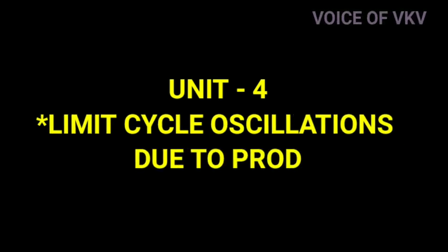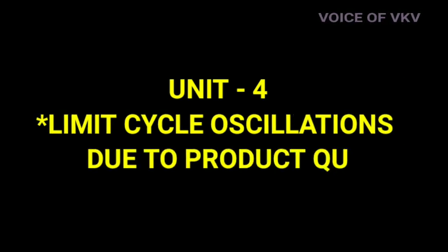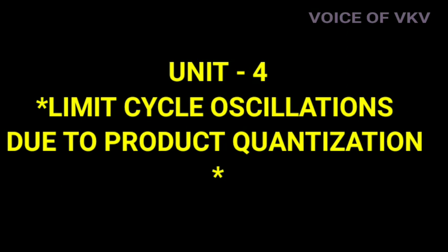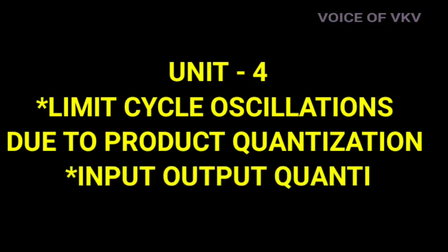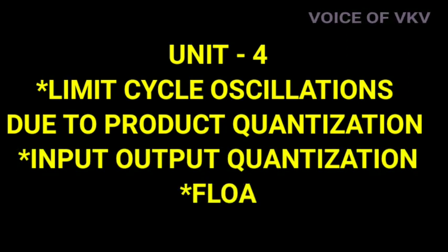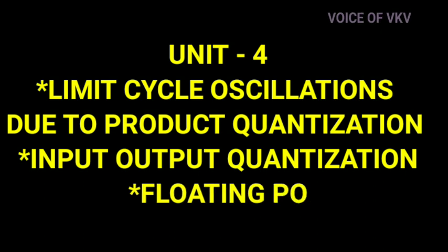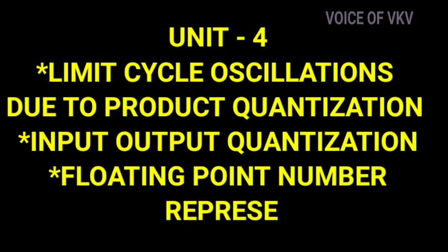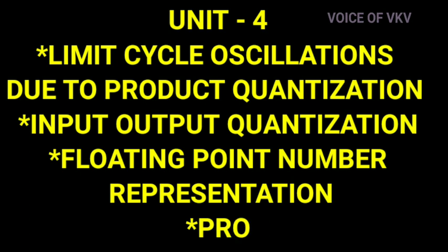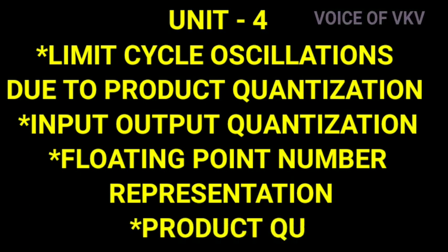Unit 4 has a total of 4 important topics. The first one is Limit Cycle Oscillation due to Product Quantization. The second one is Input Output Quantization. The third one is Floating Point Number Representation. The fourth one is Product Quantization Error. These are the 4 important topics in Unit 4.